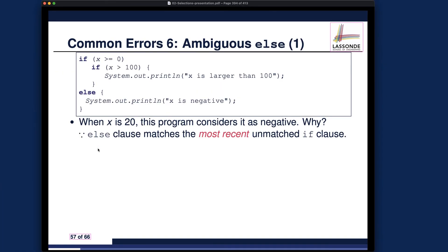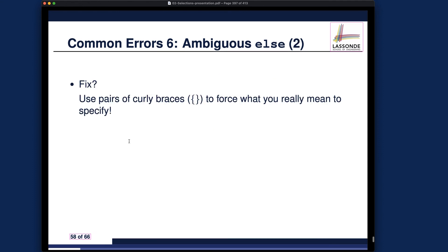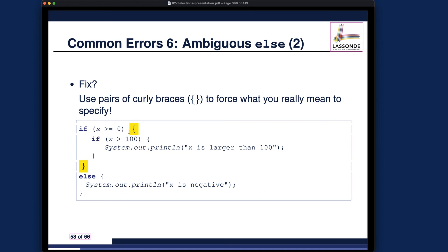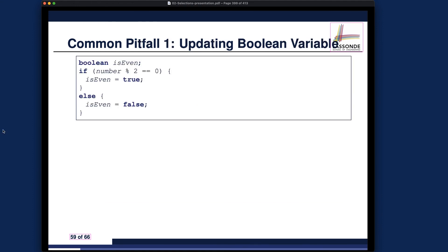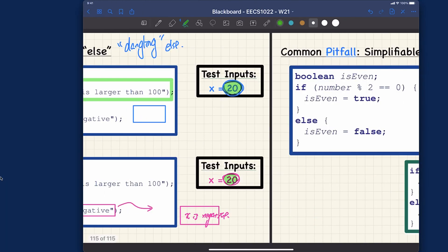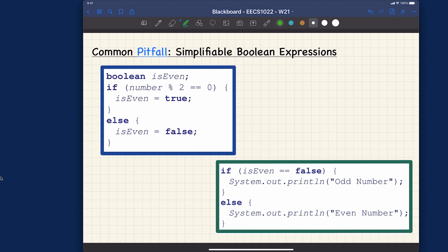You can also read about this on the slides. The fix is to add curly brackets to disambiguate the meaning of the if statement, ensuring the nested if is inside the branch body. Now the final topic: pitfalls. Pitfalls are not exactly errors, but things you can do better. I have two examples about boolean expressions, then we'll move on to loops.